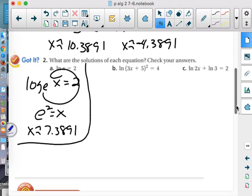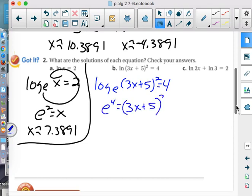Let's look at B. That looks a lot more like the example we just did. What should you do first? Logarithm base e. So e to the fourth equals (3x plus 5) squared. How are we going to get rid of that little square? Square root. And what do you have to be careful of when you do square root? Plus and minus. And what is the square root of e to the fourth? e squared.